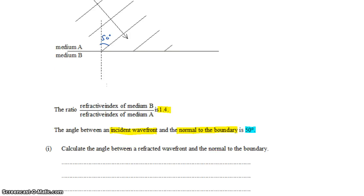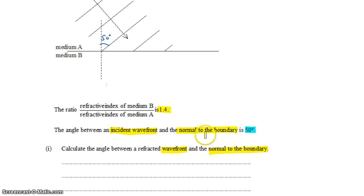We need to use this information to calculate the angle between the refracted wavefront and the normal to the boundary — in other words, how the angle at which this wave travels changes. This requires Snell's Law. The tricky part is that we're not given the angle between the normal and the ray; we're given the angle between the normal and the wavefront. So we need to go back to the diagram and fill in more information.